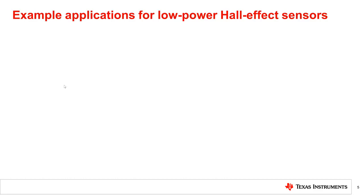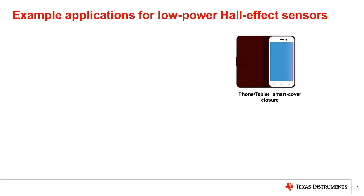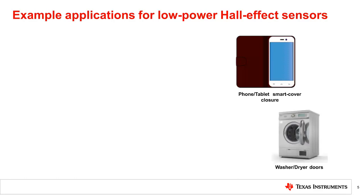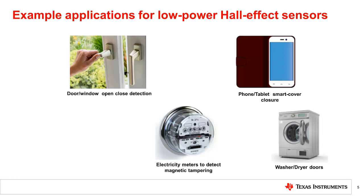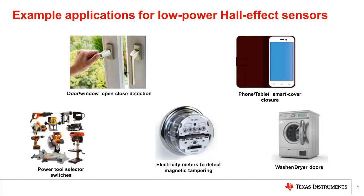To give you examples of where each of these two classes of sensors are used, here I show some low power Hall effect sensor applications: a phone and tablet closure, white goods door closure, magnetic tampering detection and e-meters, doors and windows open/close detection, and power tool selector switches.